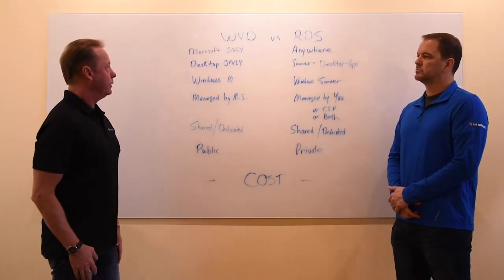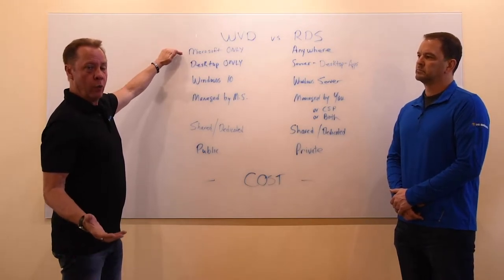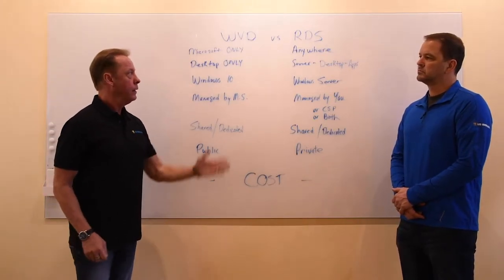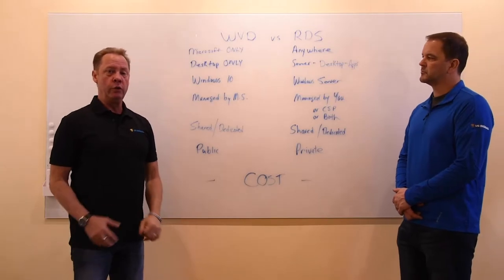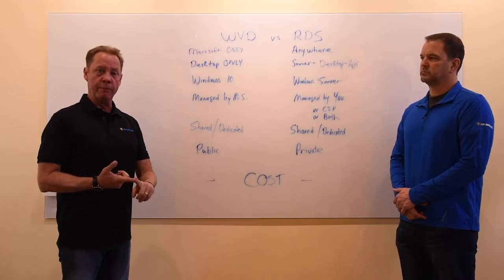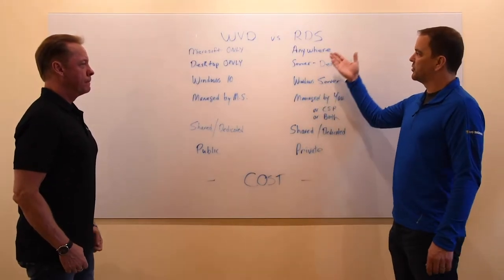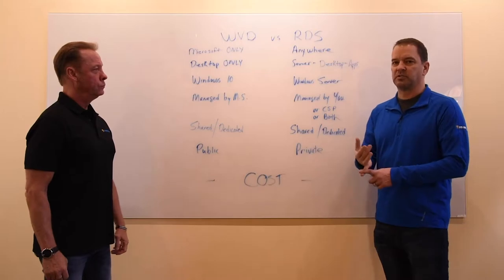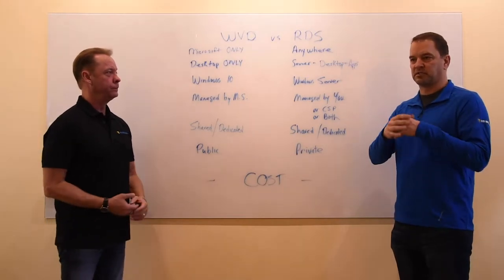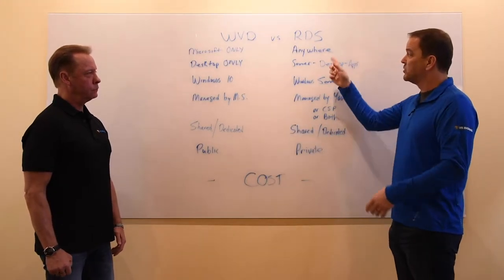The big thing that really seems to pop up a lot is the fact that Microsoft only will let you install Windows Virtual Desktop in Microsoft Azure only. With Remote Desktop Services, you can literally install that anywhere — your own on-premise environment, different public cloud providers, or a private cloud provider. With the anywhere capability of RDS, you can migrate it from one environment to another, whether moving off on-prem infrastructure into a cloud or from one cloud provider to another.